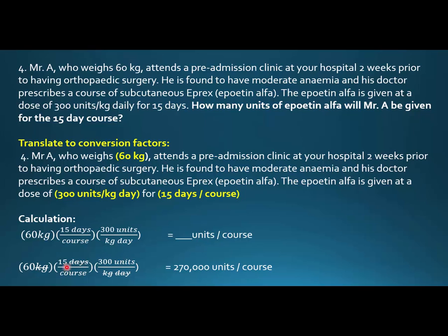And we check our work, cross off the units, and we see that we have 60 kilograms times 15 days per course times 300 units per kilogram per day equals 270,000 units per course.